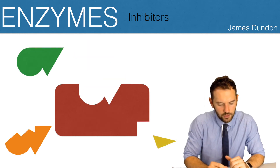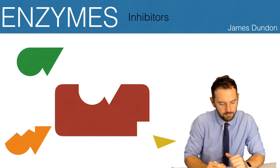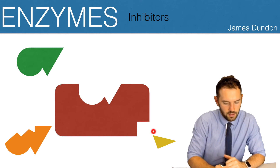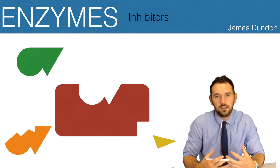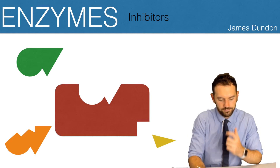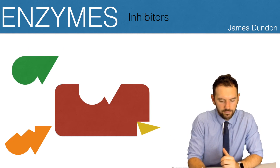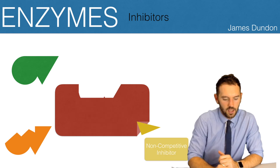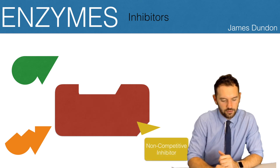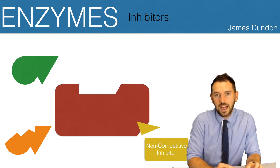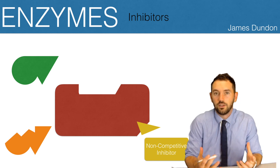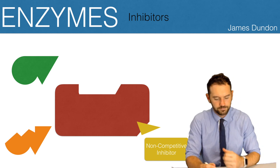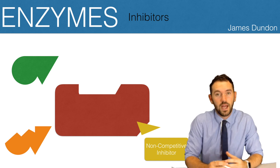In this next example you'll notice we have a molecule at the bottom which we call a non-competitive inhibitor. This binds to a place outside of the active site on the enzyme. But when it does that — by binding to that allosteric site — it actually causes a conformational change to the whole enzyme and therefore causes the active site to change. The active site is now no longer complementary to the desired substrate, so the reaction can't take place.